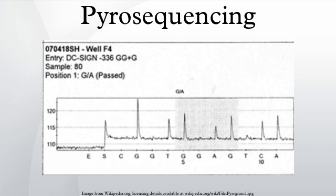As of 2007, pyrosequencing is most commonly used for resequencing or sequencing of genomes for which the sequence of a close relative is already available. The templates for pyrosequencing can be made by both solid phase template preparation and enzymatic template preparation, so pyrosequencing can be differentiated into two types: solid phase pyrosequencing and liquid phase pyrosequencing.